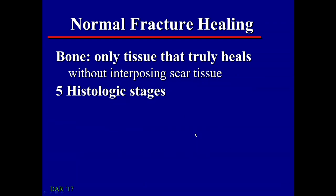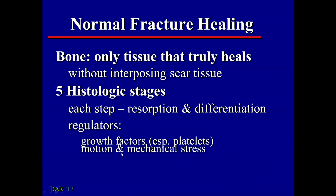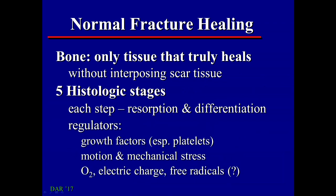It happens in five histologic stages that we'll go through. At each of these stages, we resorb the product that was made from the previous stage, and the cells that are there differentiate into something new and then form new product for the next stage. There are several regulators of this process, including growth factors — especially those released from platelets — motion and mechanical stresses, oxygen, electrical charge, and possibly free radicals.